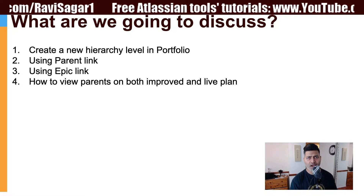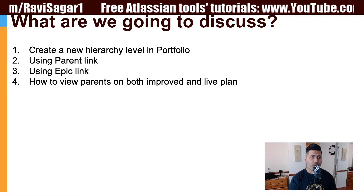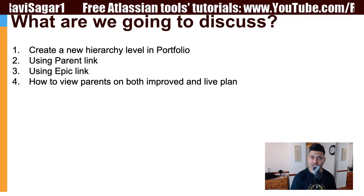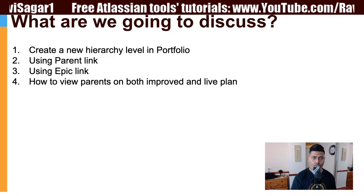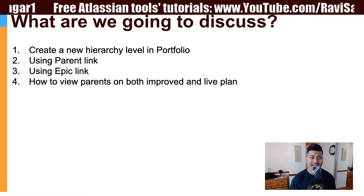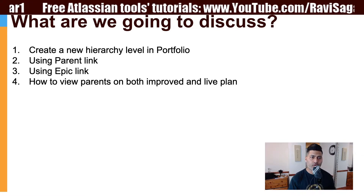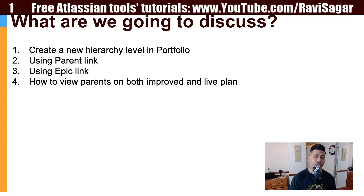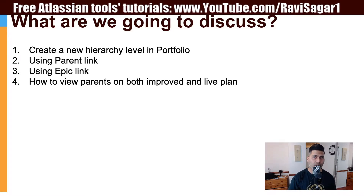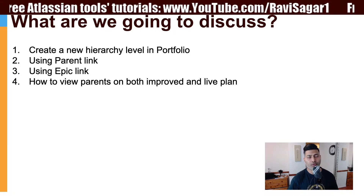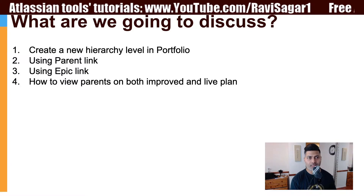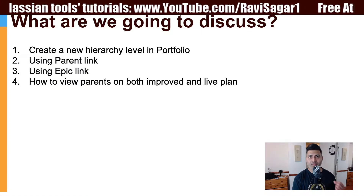When you have the hierarchy defined, you will have initiatives, then epics under initiatives, then stories under epics. You can view them in your plan, but with the help of the parent and epic link you can also see the actual issue ID separately as a field in your view, making it possible to manage those specific links.